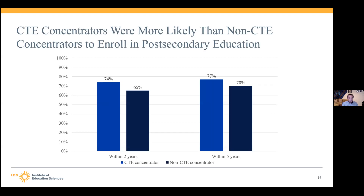CTE concentrators were also more likely to enroll in post-secondary education, both within two years and five years of high school. That enrollment includes seeking some kind of professional certificate, being in a diploma-granting program, or a two- or four-year institution. In our impact analysis, CTE concentrators were 10 percentage points and 8 percentage points more likely to enroll in some kind of post-secondary education within two and five years respectively. Additional analyses found them more likely to be enrolled full-time and at both two- and four-year institutions two years after high school.